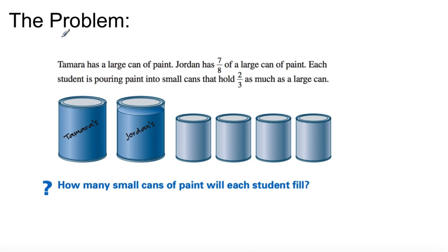The problem: Tamara has a large can of paint. Jordan has seven eighths of a large can of paint. Each student is pouring paint into small cans that hold two thirds as much as a large can. Here's your diagram. The question is how many small cans of paint will each student fill?